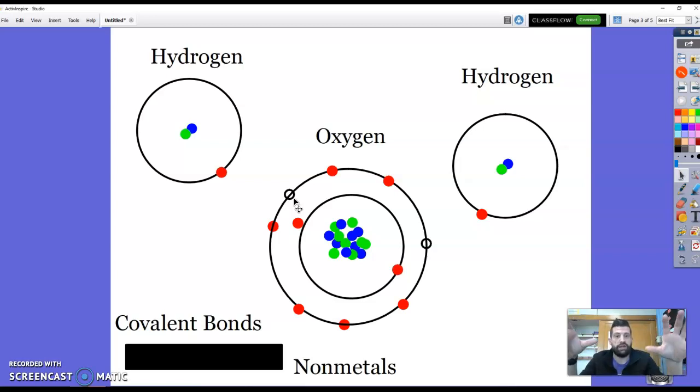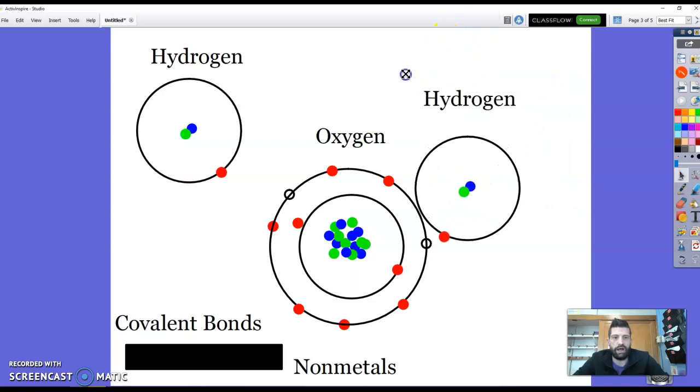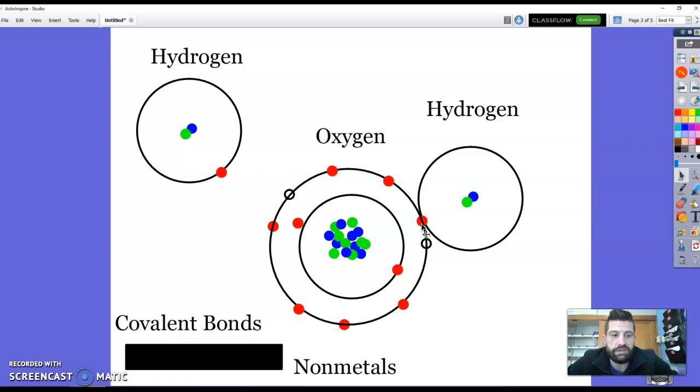So the covalent bond forms because an oxygen atom wants two more electrons in that outer shell. It needs to fill those. Hydrogen wants an extra atom also because it wants two in this shell. So they want to fill those shells. So the way a covalent bond works is that these hydrogen atoms are going to move down and they're going to bond with the oxygen atom.